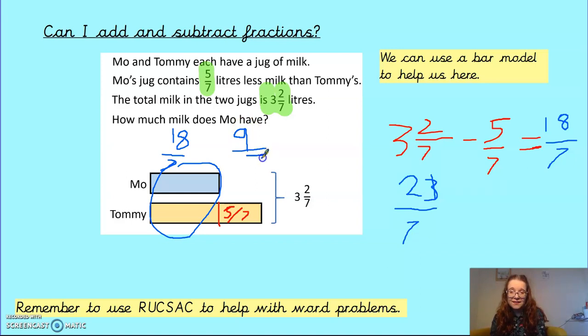And I can check it again by doing the inverse, and I can say, right, Moe has 9 7ths. Tommy has 9 7ths. That's it. And then Tommy also has an extra 5 7ths here. And I can add those all up, have a go, see if that comes to the correct thing. You might have to exchange it back into a mixed number.